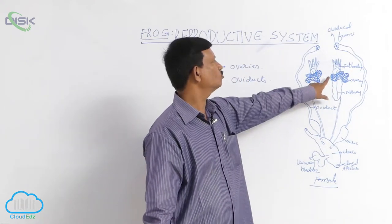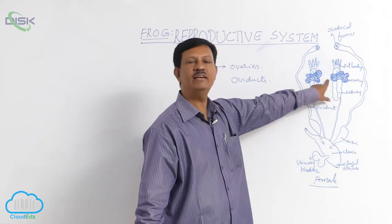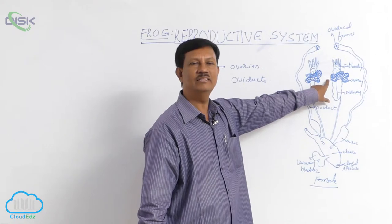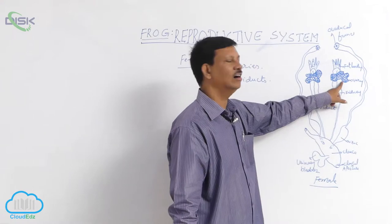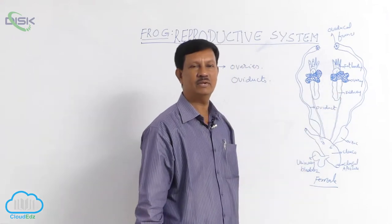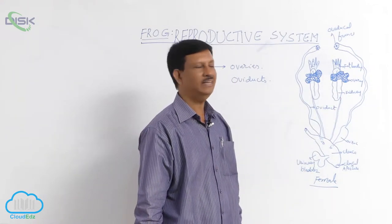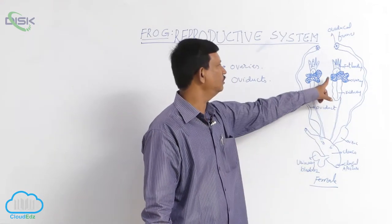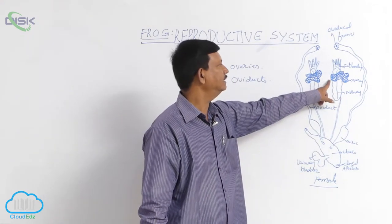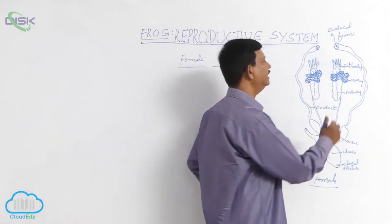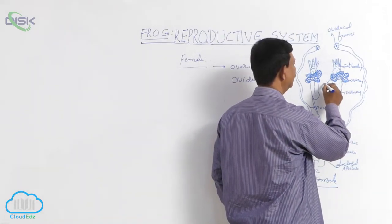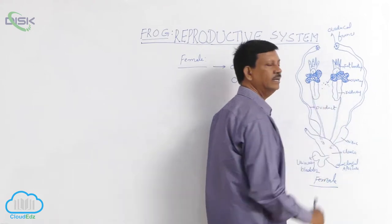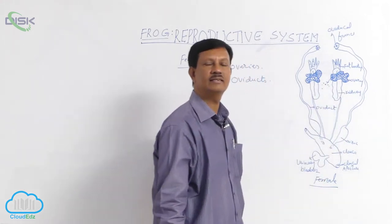There are so many ovarian follicles found in the ovary. They produce ova, or eggs, which are the female gametes. When they mature, by the rupture of the ovarian follicles, they are liberated into the body cavity.